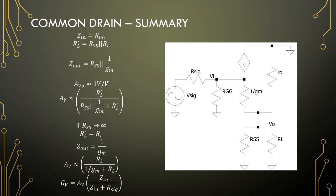Looking at the common drain as a summary: there is zero current flowing into the gate, so RG is responsible for your input impedance. On the output impedance side, you are seeing 1/GM in parallel with RS.